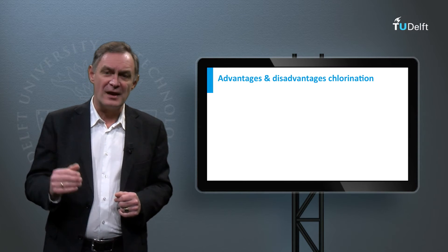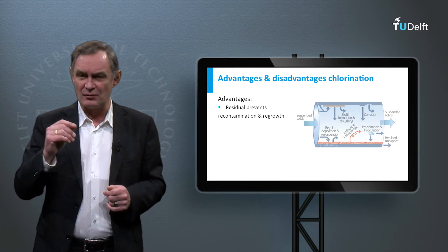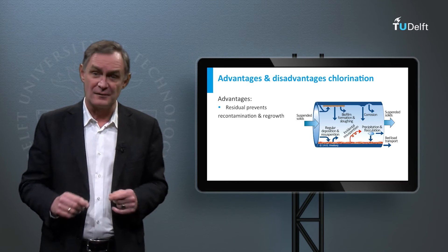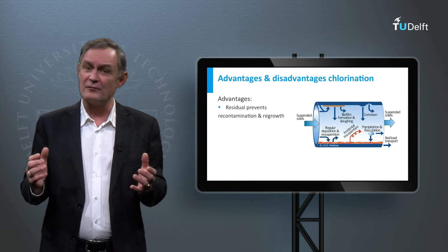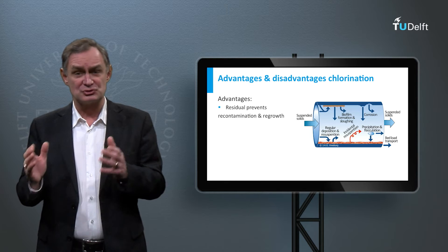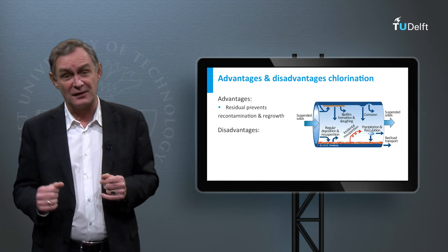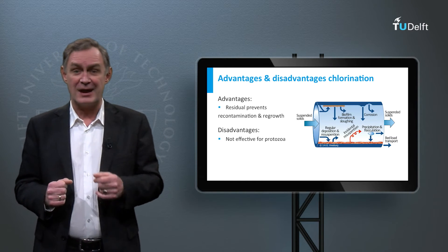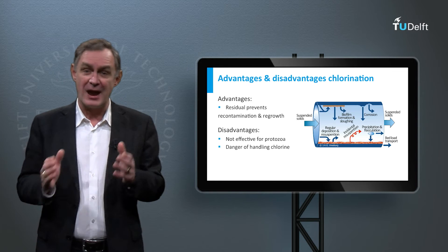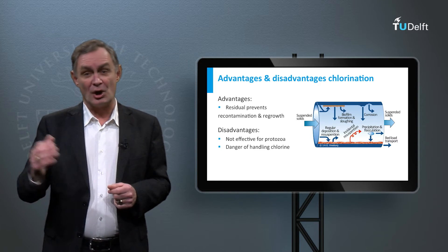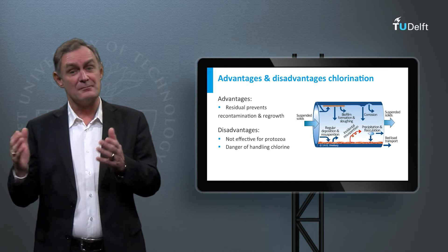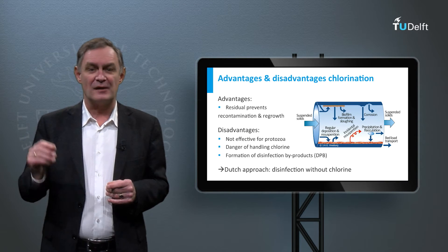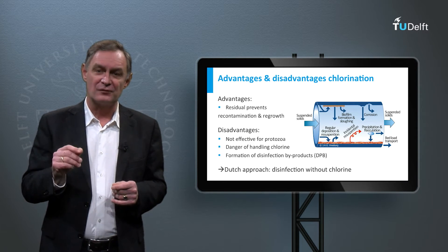The main advantage of chlorine is that it provides a residual and can thus be used as transport chlorination to prevent regrowth in the distribution system. However, the use of chlorine has also some downsides. It is, for example, less effective for protozoa. In addition, since it is a strong oxidant and extremely corrosive, special storage and handling measures should be taken. The other disadvantage is the formation of disinfection by-products. Therefore, chlorination is no longer applied in water treatment in the Netherlands.